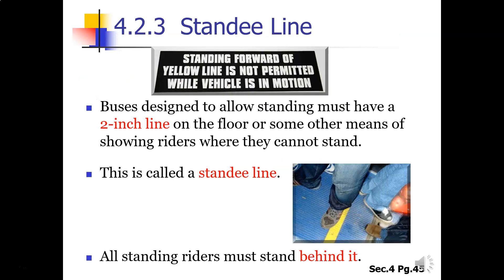No rider may stand forward of the rear of the driver's seat. Buses designed to allow standing must have a two-inch line on the floor or some other means of showing riders where they cannot stand. This is called the standee line, and all riders must stay behind it.